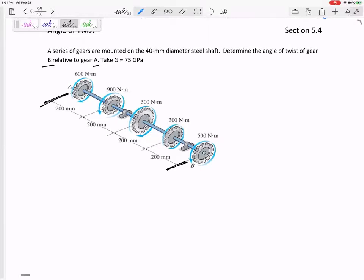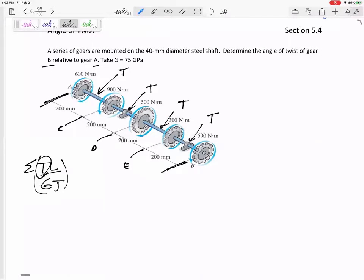I need to find the TL over GJ in every section, and then add up section AC, section CD, section DE, section EB. Break them up into sections because this T is changing in each section. So here's the torque. We need to find the T in each section. We did a problem last class where you had to find the torque in each section. This is important that you're able to find this torque T.